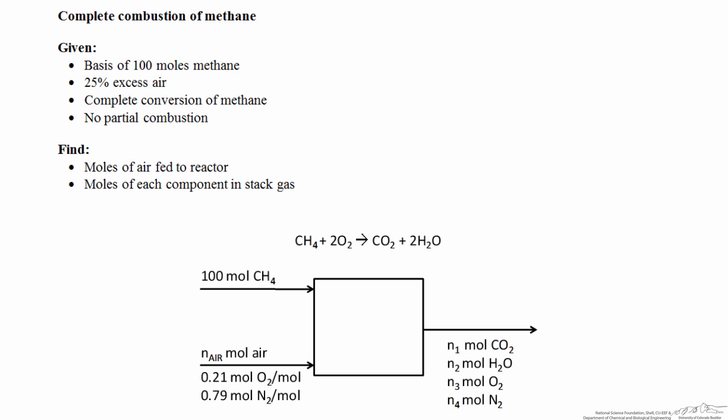An example of a labeled diagram is shown at the bottom. The first two pieces of information given tell us something about the feed to the reactor. Here we have our basis of 100 moles of methane, and we have an unknown variable n_air to represent the feed to the reactor. We don't know how much air there is, but we know it's at 25% excess, and we also know the composition.